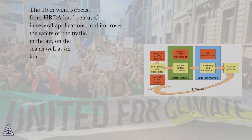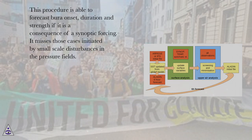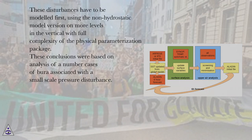The 10-meter wind forecast from HRDA has been used in several applications and improved the safety of traffic in the air, on the sea, and on land. Unfortunately, there were also events of short bora episodes connected to a local pressure disturbance (Tudor and Ivatek-Saden, 2010) that were not predicted by HRDA. These were used in a further study to assess the impact of neglected effects on these bora episodes. This procedure is able to forecast bora onset, duration, and strength if it is a consequence of synoptic forcing, but it misses cases initiated by small-scale disturbances in the pressure fields. These disturbances have to be modeled first using the non-hydrostatic model version on more levels in the vertical with full complexity of the physical parameterization package.